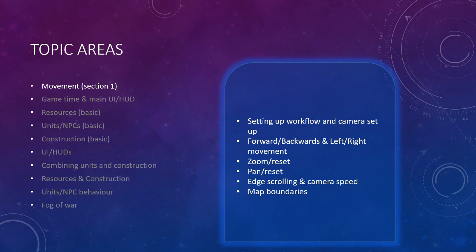In the second video we did our movement forwards and backwards as well as our left and right movement, which we then iterated again in our fifth video. In the third one we set up our zoom and reset, in the fourth our pan and the pan reset, and then in the fifth one we fixed the issues of movement based off pan and zooming. We then set up our edge scrolling and camera speeds, and finally we set up our map boundaries.